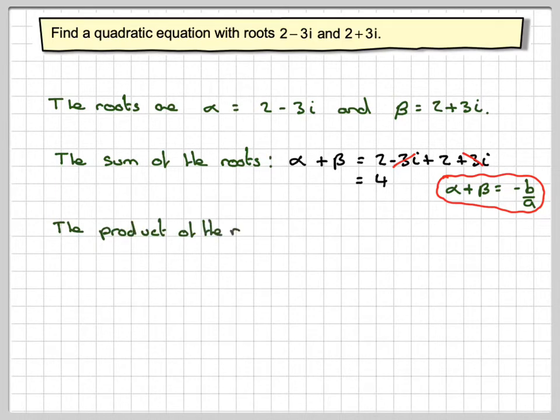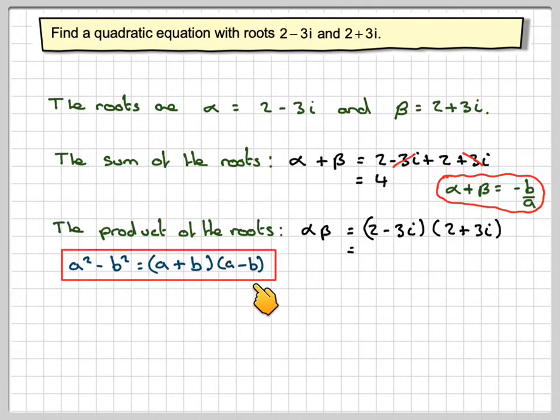The product of the roots, alpha beta, so we'll need to multiply 2 minus 3i, 2 plus 3i. Using the difference of two squares is a plus b, a minus b.